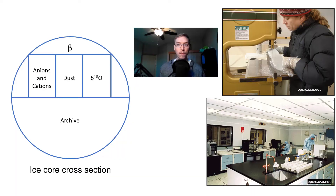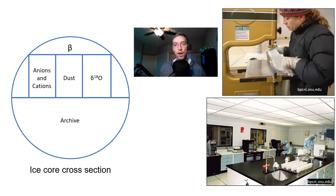Here we can look at isotopes, dust, anions and cations, and the rest is kept as an archive of the varves or layers of the ice cores. This is what one of those laboratories looks like — these are some slides from folks at Ohio State University, from the bpcrc.osu.edu website.